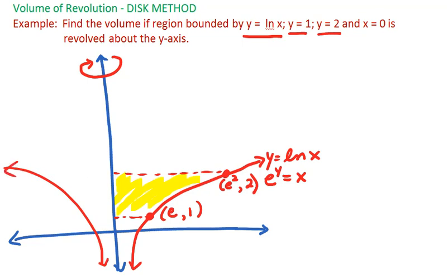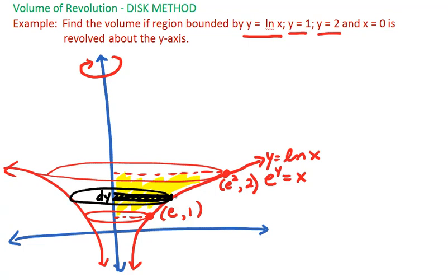We can see that we would have disks as we move throughout the region. Your task is always to show one sample disk. Here, I want to have a horizontal rectangle with dy as its thickness. That would represent our typical disk.